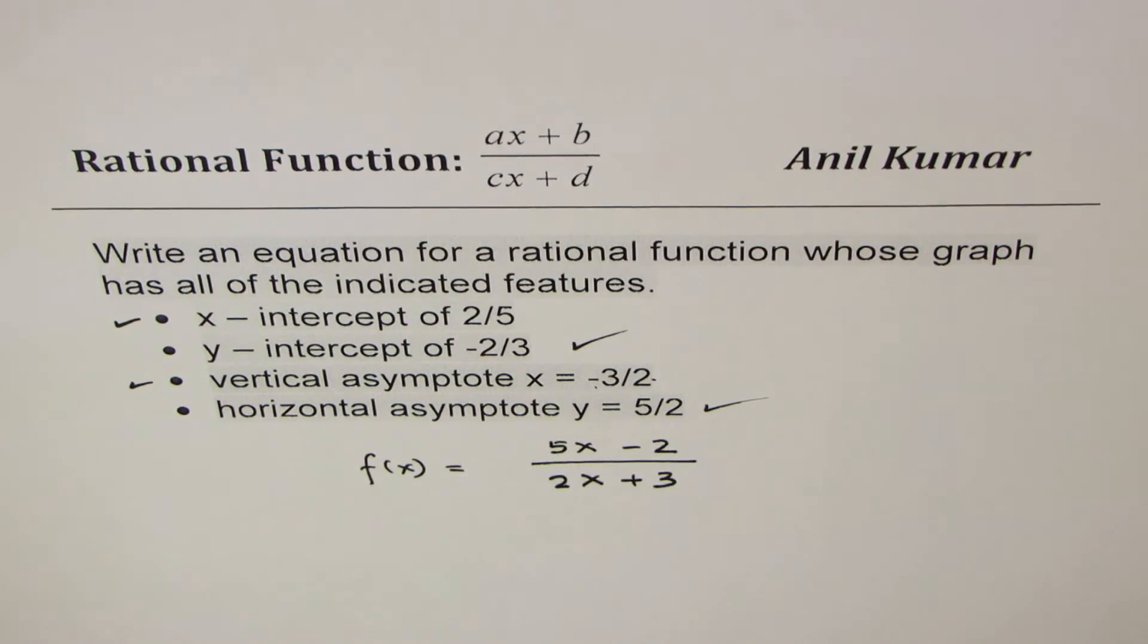So do you see how easy it is to write rational functions of the form ax plus b over cx plus d with given conditions? You basically have to check only two of them to get it right, and the other two to confirm that you have the correct solution.